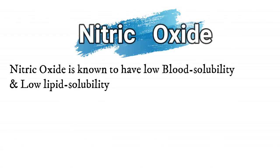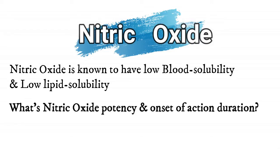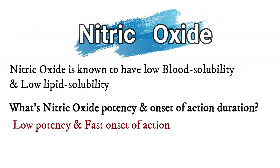First example: nitric oxide is known to have low blood solubility and low lipid solubility. What is nitric oxide's potency and onset of action duration? The correct answer is low potency and faster onset of action.